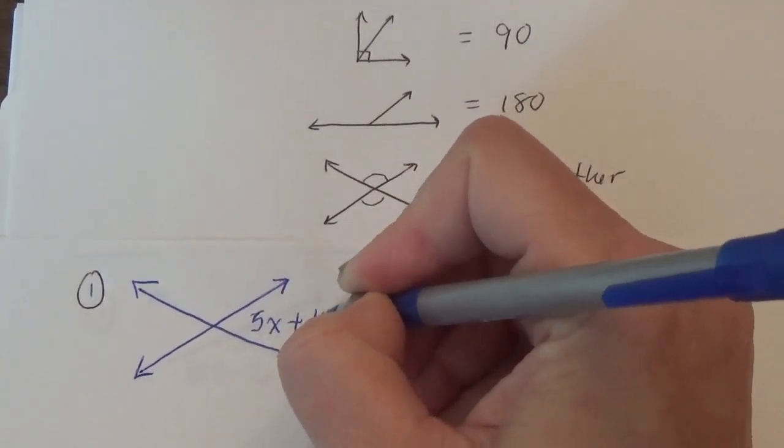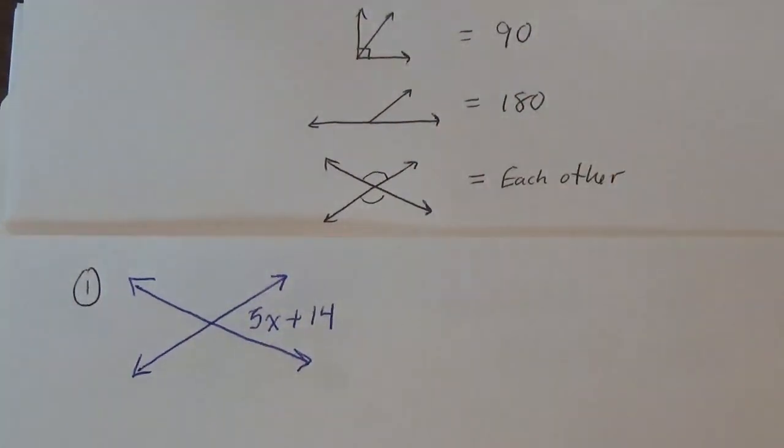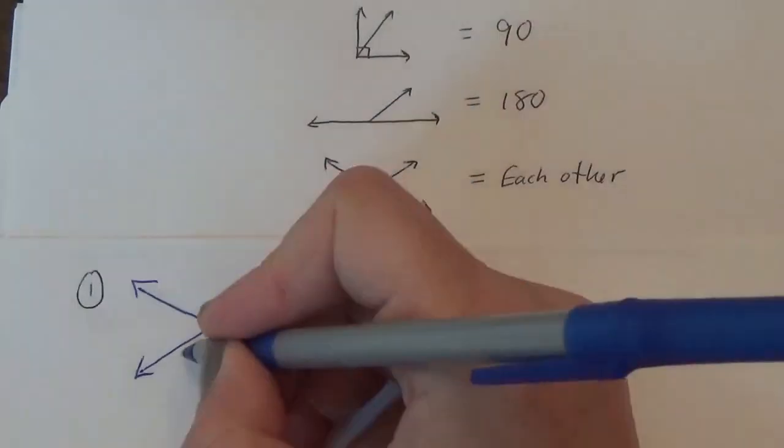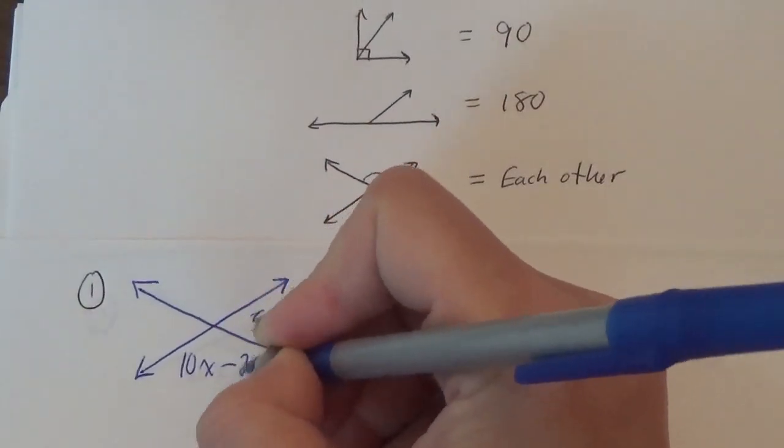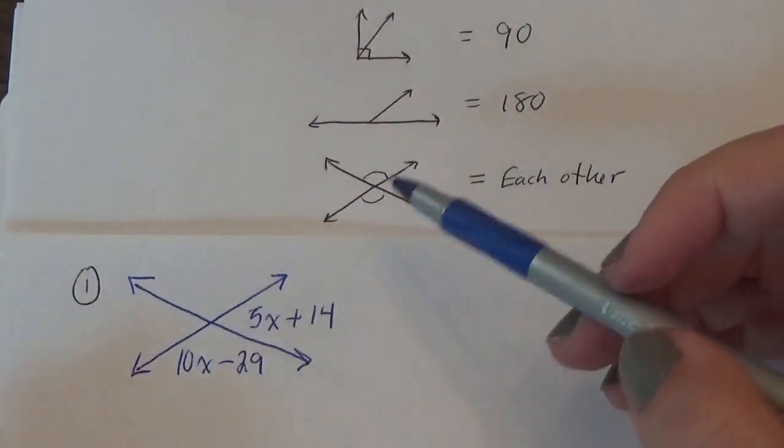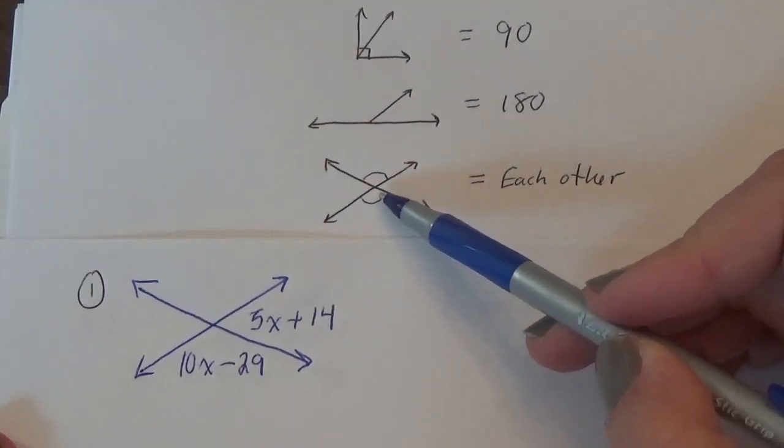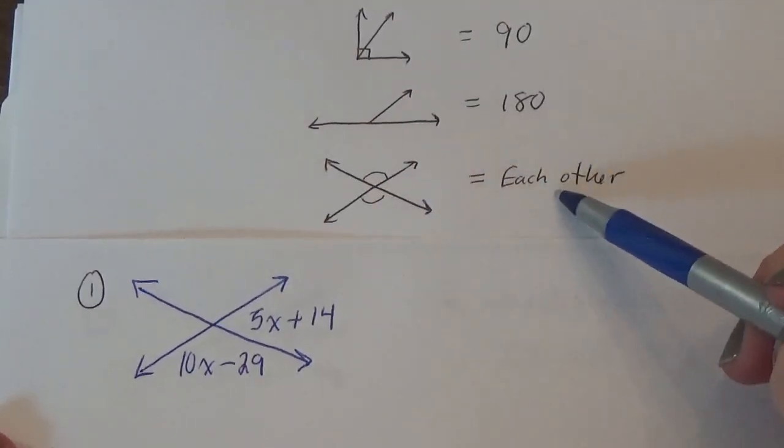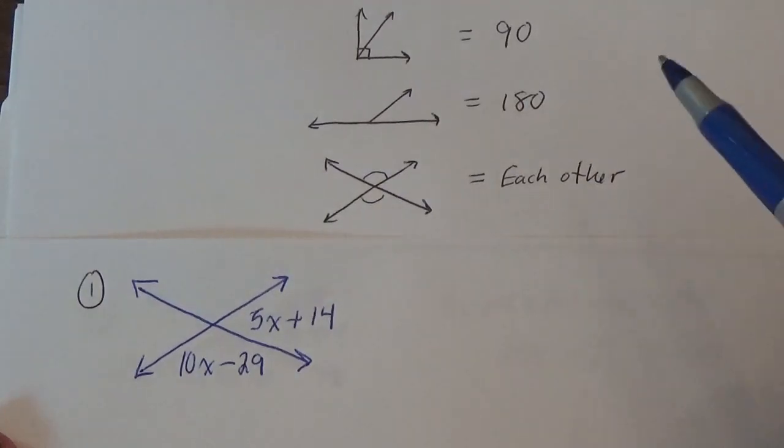They tell you this angle is 5x plus 14 and this angle down here is 10x minus 29. Now why is that mean? It's mean because it looks like this example. So it looks like you should have them equal to each other, but be careful.